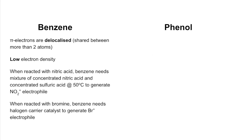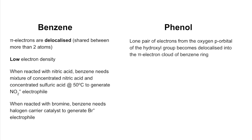Moving on to phenol: the lone pair of electrons from the oxygen's P orbital in the hydroxyl group becomes delocalised into the pi electron cloud of the benzene ring. That increases the electron density, so effectively you've got eight pi electrons now rather than just six.